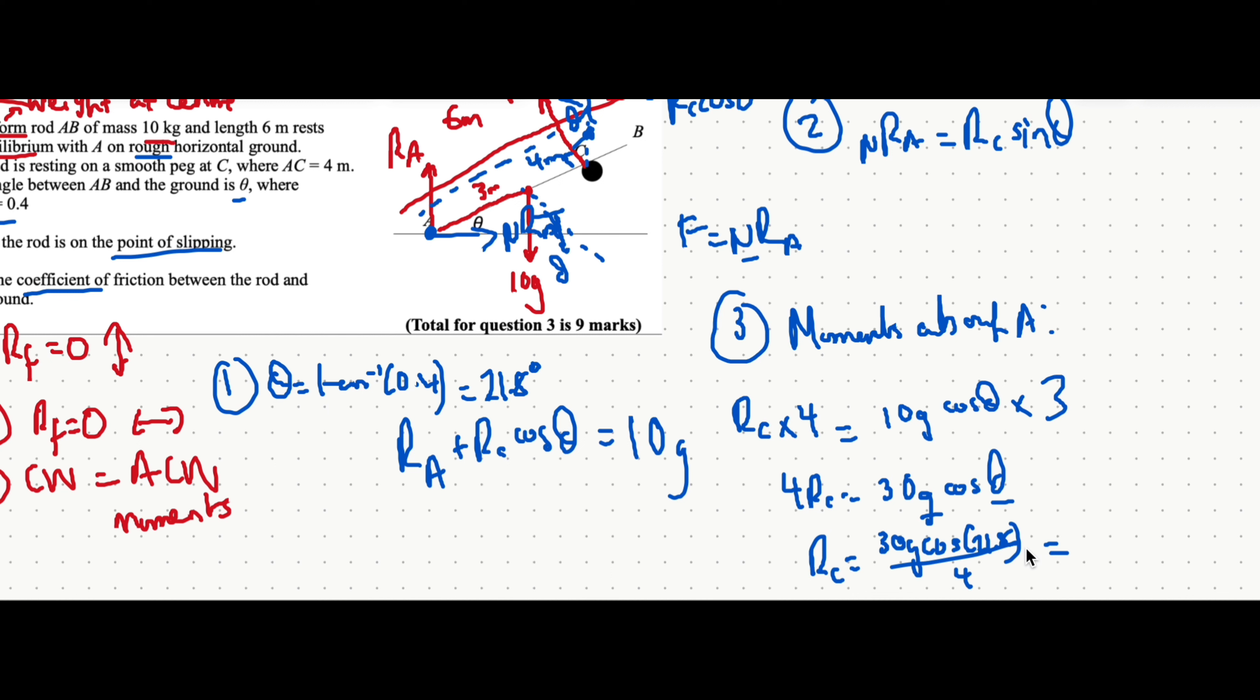30 times 9.8 times cos of the angle, which is 21.8, all divided by 4 is equal to 68.2 newtons.